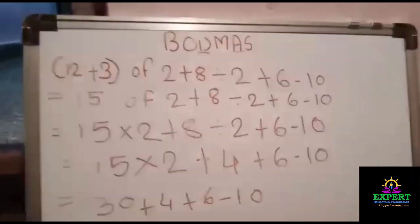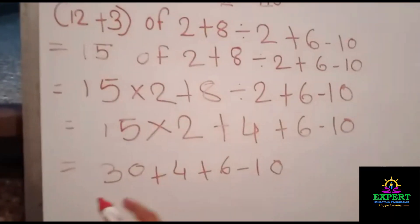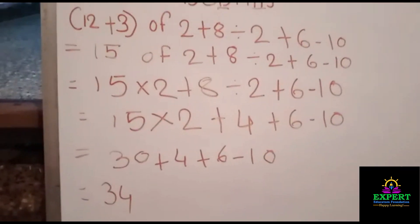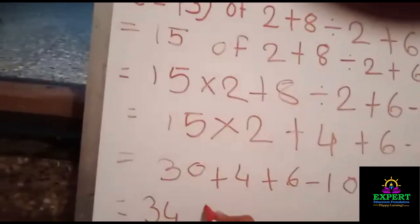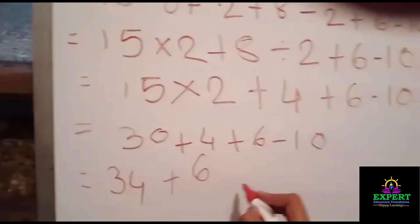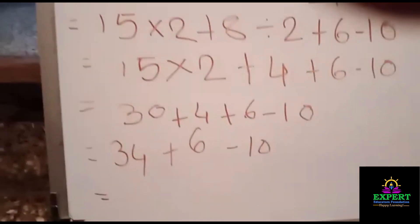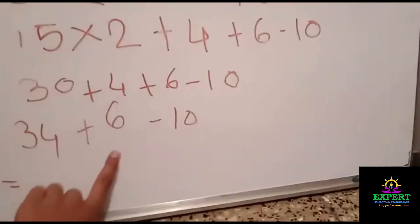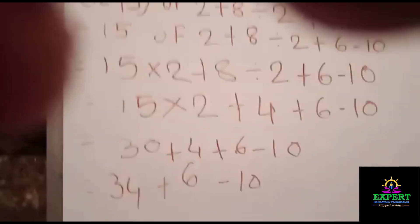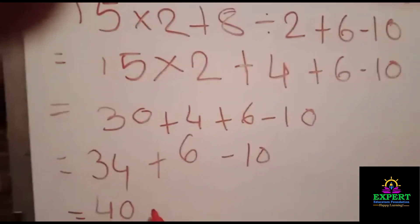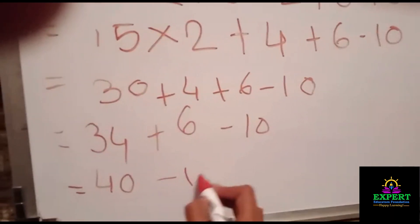So it is 30 plus 4 is equal to 34. So we will write 34 plus 6 minus 10. 34 plus 6 how much? 40. Yes, 40, and as it is, minus 10.